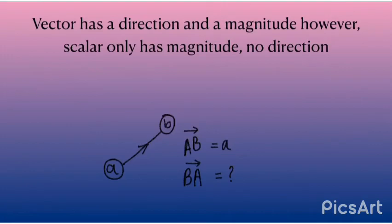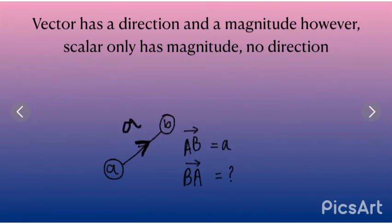A vector has a direction and a magnitude. However, a scalar only has a magnitude and no direction. So in this question, it is A to B and the arrow has also been marked here. So now we know that A to B is equal to a. But now I want to know what is B to A. Since B to A will be the opposite direction, it will be minus a. So whenever it is the opposite direction, it is always minus.